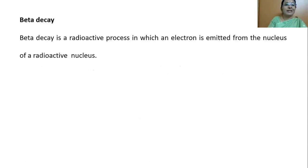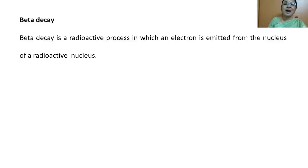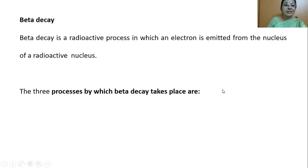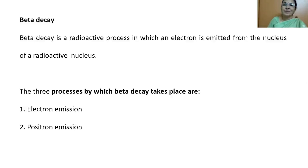Beta decay is a radioactive process in which an electron is emitted from the radioactive nucleus. You may wonder how electrons come out of the nucleus, since we know the nucleus is composed of protons and neutrons only. The answer comes by understanding the following three processes: electron emission, positron emission, and electron capture.